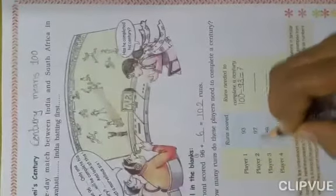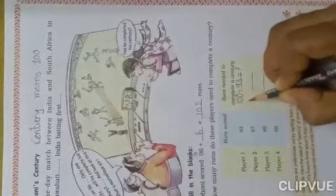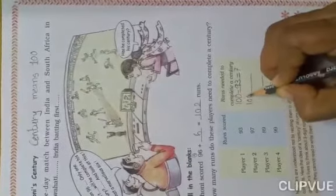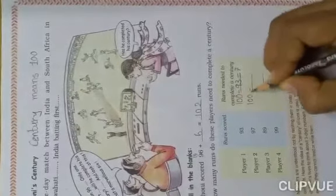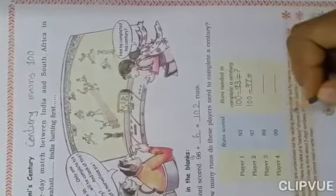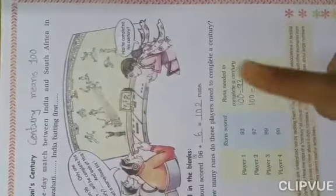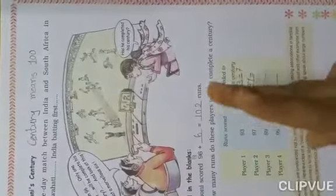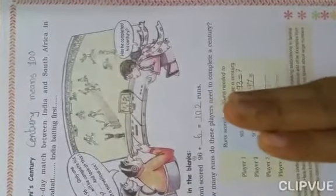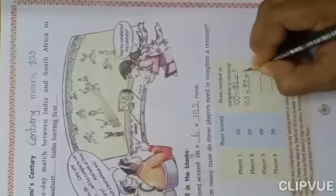Player number 2 — 97 runs kiye hai. Usko agar apni century complete karni hogi toh 100 minus 97 hum karenge, toh hume mil jaayenge ki usko kitne aur runs chahiye. 97 after: 98, 99 and 100 — means only 3 runs he needs to complete his century.